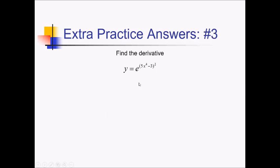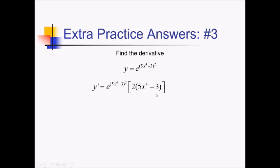On this problem, I'm trying to find the derivative of e to all this craziness, so this is going to be a big chain rule. I start with the derivative of the outer function: e to the something, which is still e to that same something. Then I multiply by the inner derivative. I have something squared, so the derivative is 2 times 5x to the 4th minus 3. And finally I multiply by the derivative of 5x to the 4th minus 3, which is 20x to the 3rd.